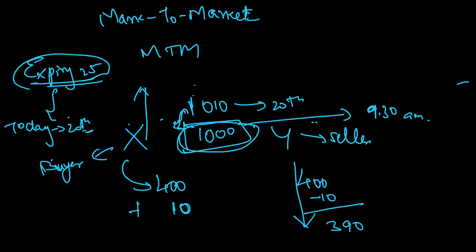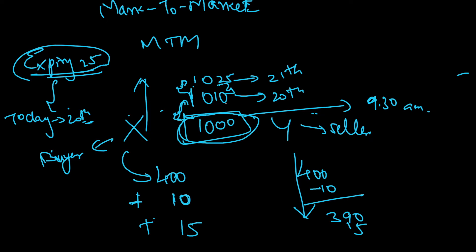Then on the 21st, imagine the price goes to 1025. It has gone up by 15 — that is 1025 minus 1010. So at end of day on the 21st, the closing price is 1025. The buyer is happy again because the price has gone up. The effect between 1025 and 1010 is 15, so that 15 amount will be added to the buyer's account and reduced from the seller's account.